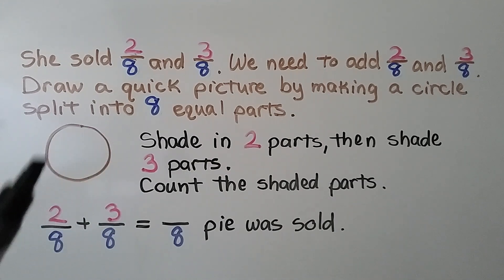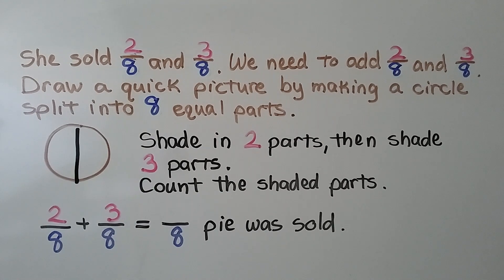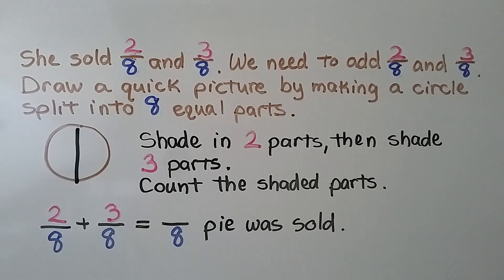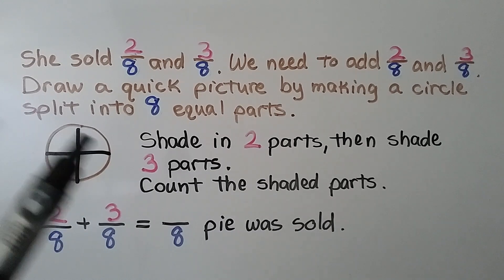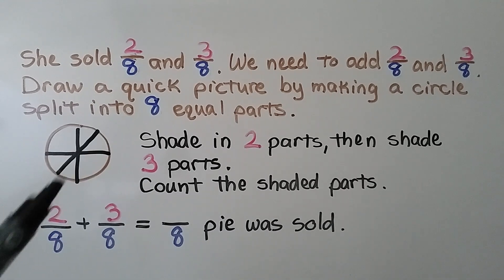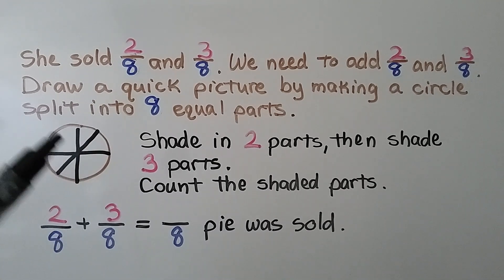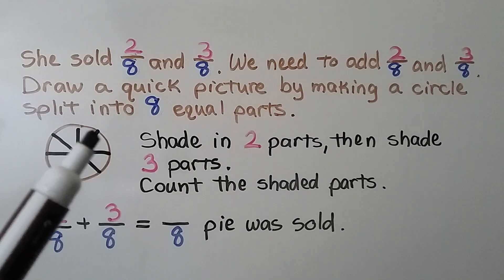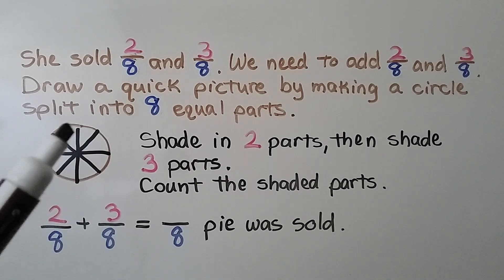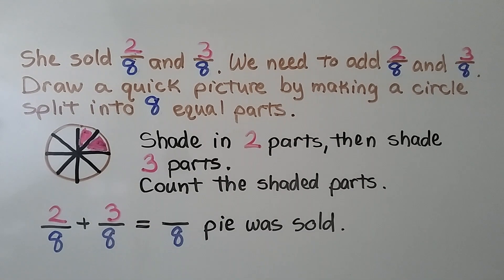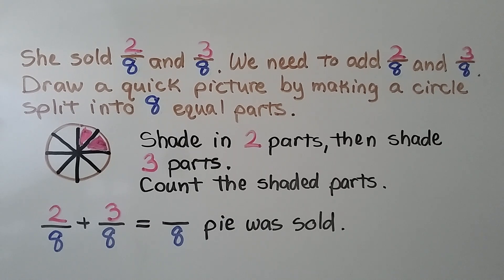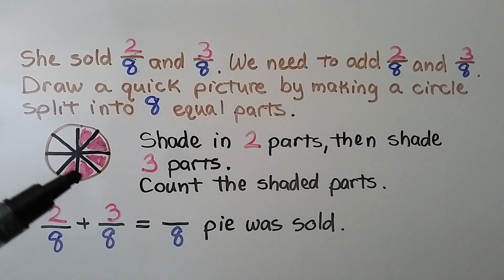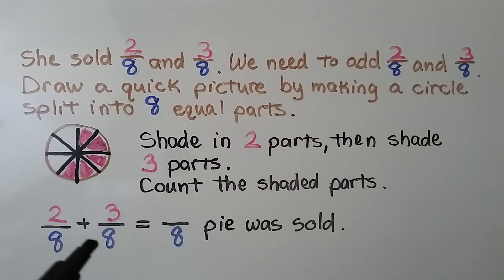We draw a quick picture by making a circle for the pie and splitting it into eight equal parts. First, a line splits it into two equal parts, then we cross that line for four parts. We draw a line to split those in half, and another line to split again — now we have eight parts. We shade in two parts, then shade in three parts.